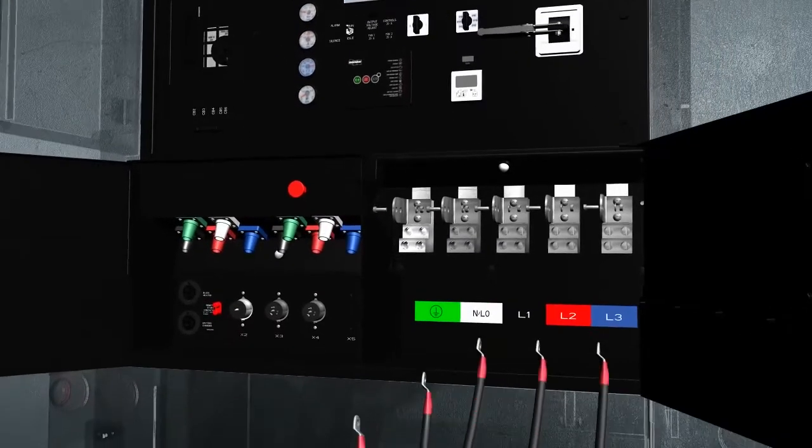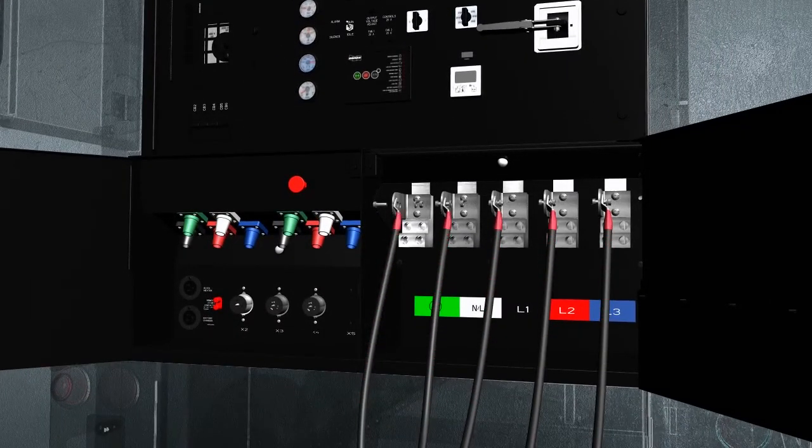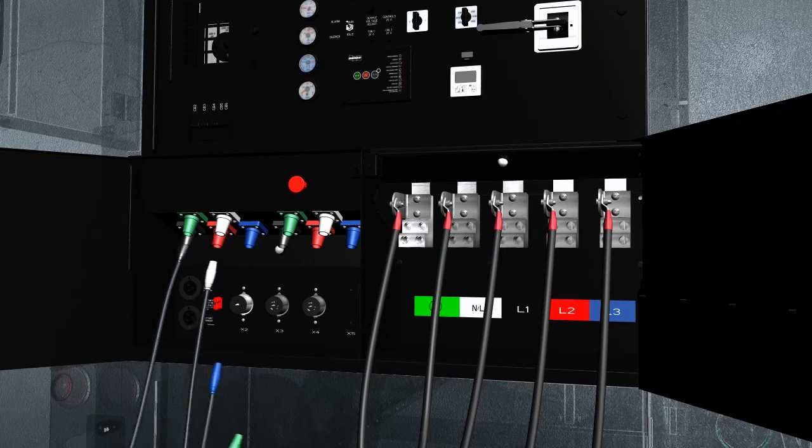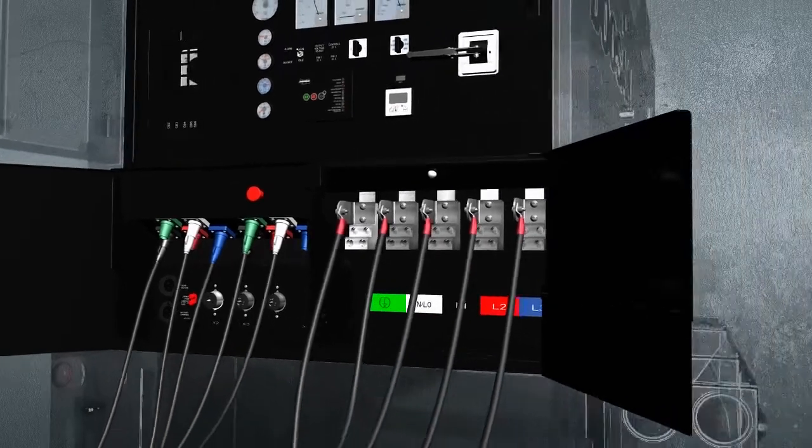Once power reaches the connection panel, operators can attach power cables to the generator's terminal board, receptacle panel, or cam lock panel, transforming electrical energy into light, heat, or motion, providing the power we rely on every day.